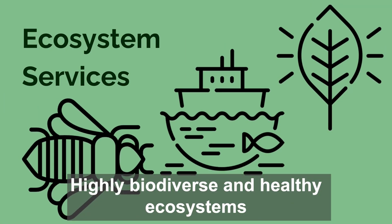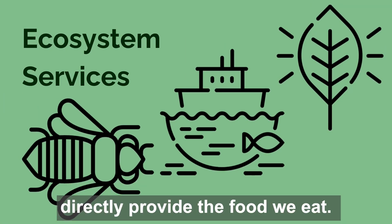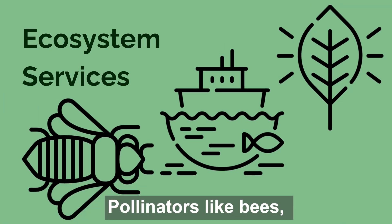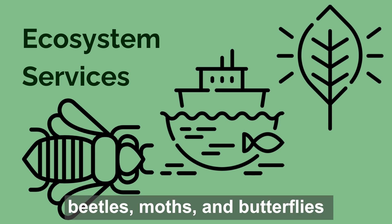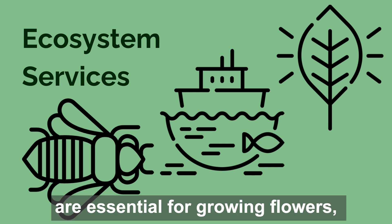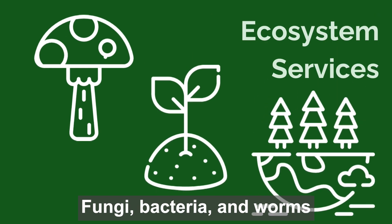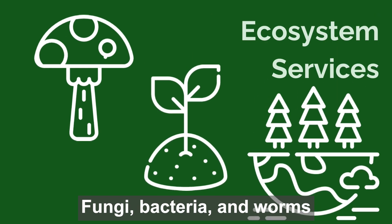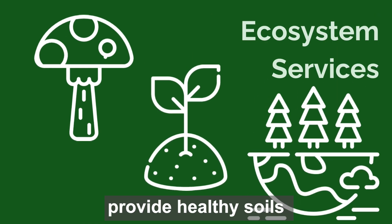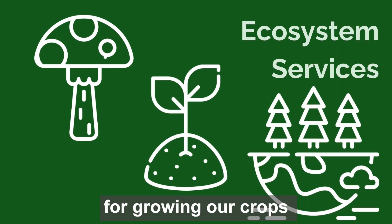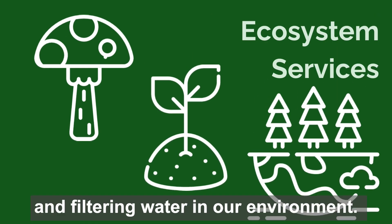Highly biodiverse and healthy ecosystems directly provide the food we eat. Pollinators like bees, beetles, moths, and butterflies are essential for growing flowers, our crops, and other plants. Fungi, bacteria, and worms provide healthy soils for growing our crops and filtering water in our environment.